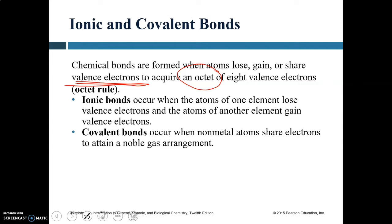Ionic bonds happen when atoms of one element lose valence electrons while atoms of another element gain valence electrons. Covalent bonds occur when atoms of various non-metals share electrons and attain a noble gas arrangement.